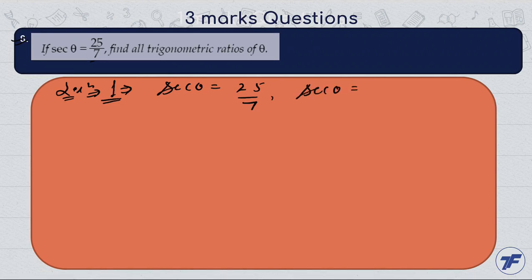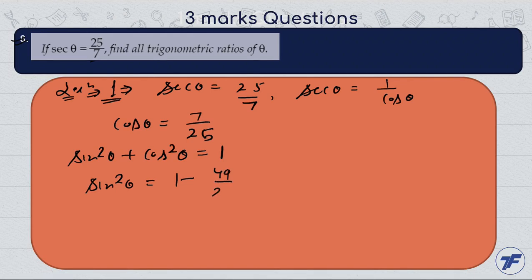sec θ is equal to 1 by cos θ, so the cos θ value will be the reciprocal of sec θ, which is 7 by 25. Using the identity sin²θ + cos²θ = 1, we have sin²θ equals 1 minus 49 by 625, so sin θ equals 24 by 25. Clear?